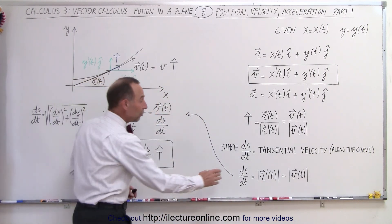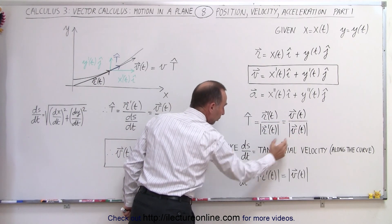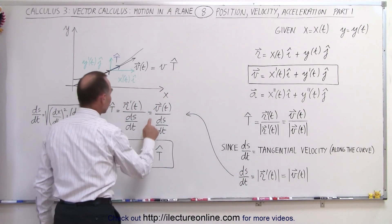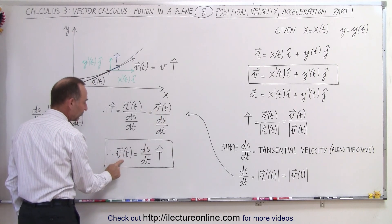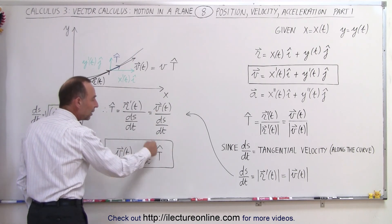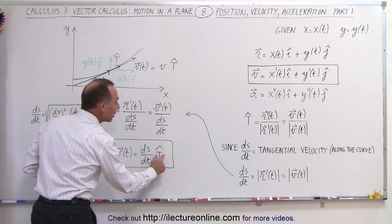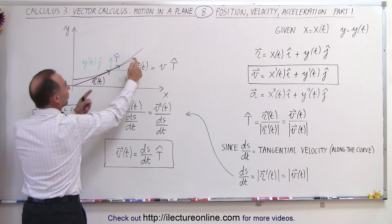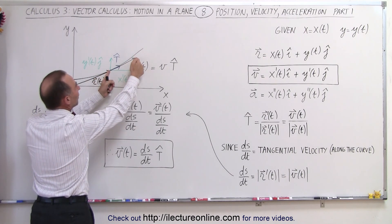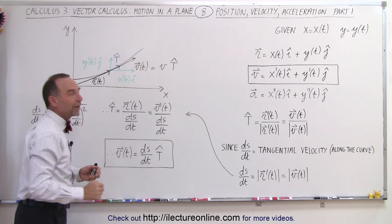If we plug this into the equation, instead of dividing the velocity vector by its magnitude, we divide by ds/dt. Solving for the velocity vector, we get that it can be expressed as ds/dt — the rate of change of position along the curve with respect to time — multiplied by the unit tangent vector. The magnitude of the velocity vector (ds/dt) times the unit tangent vector gives us the velocity vector.